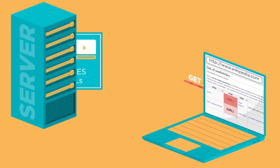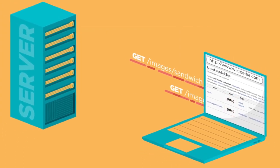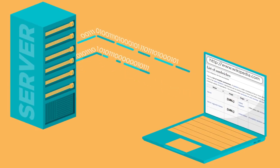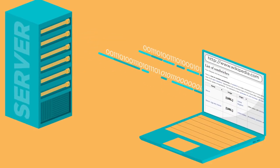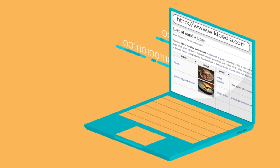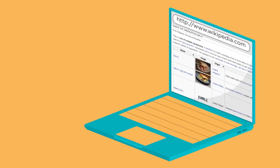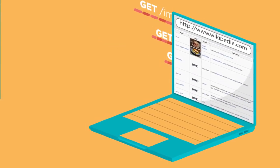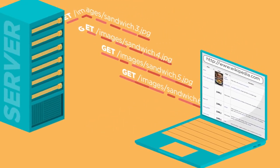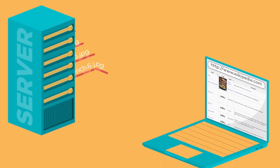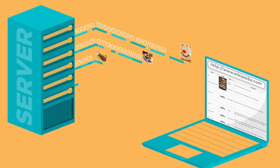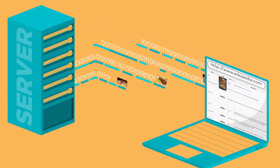The browser sends separate HTTP requests for each of these and displays them as they arrive. If a web page has a lot of different images, each of them causes a separate HTTP request, and the page loads slower.